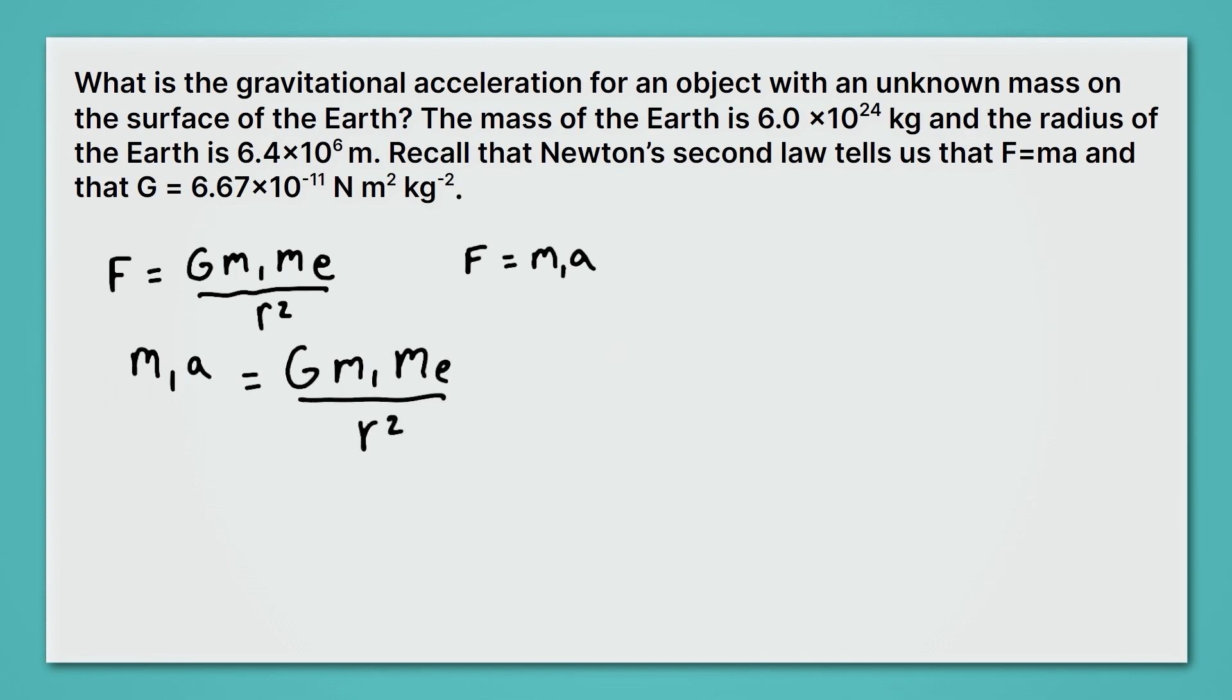Now we'll substitute in our M1A and we'll get M1 times A equals G M1 ME all over R squared. And here's where all the magic happens, my friends. When we want to solve for acceleration, we divide both sides by mass one. What does that do? That doesn't make mass one cancel out just on the left. Mass one cancels out here and here. So notice, because force depends on mass and the gravitational strength depends on mass, they cancel out.